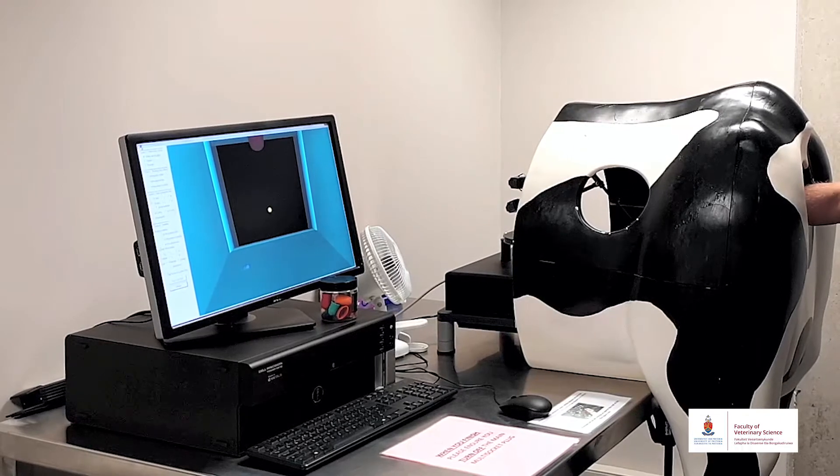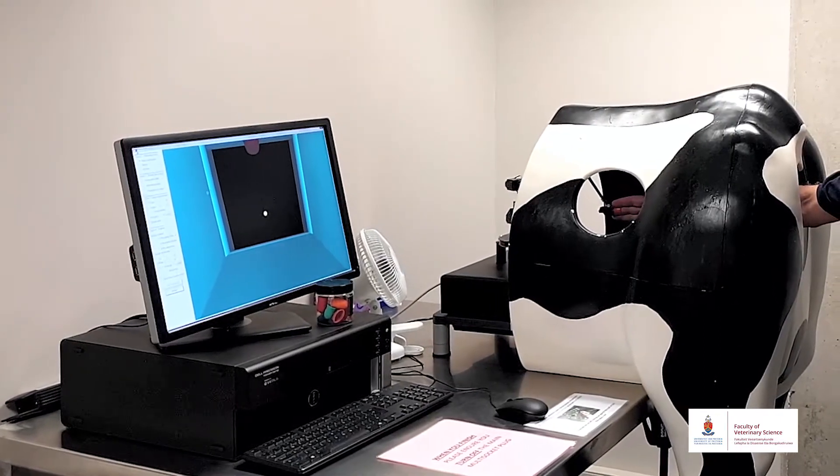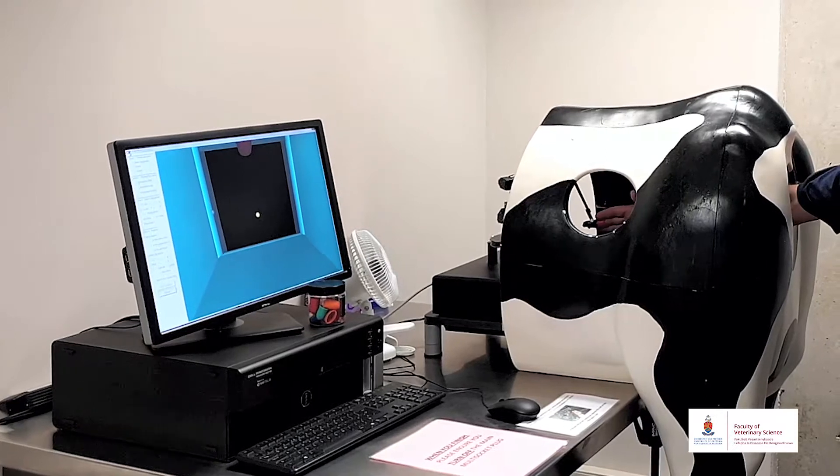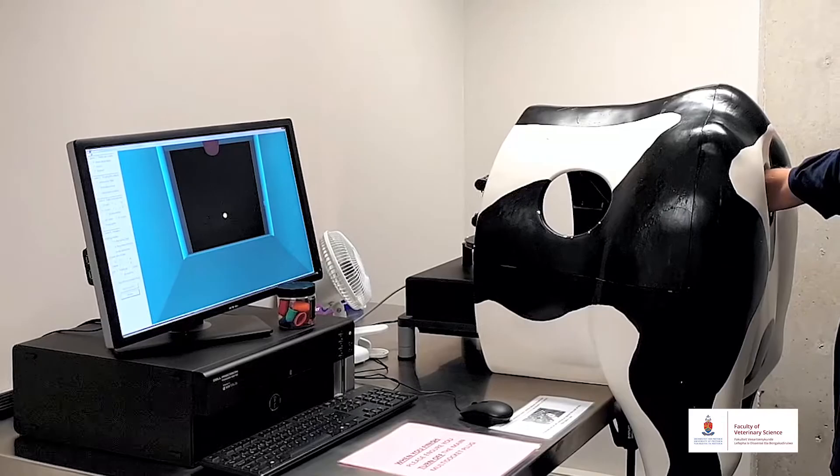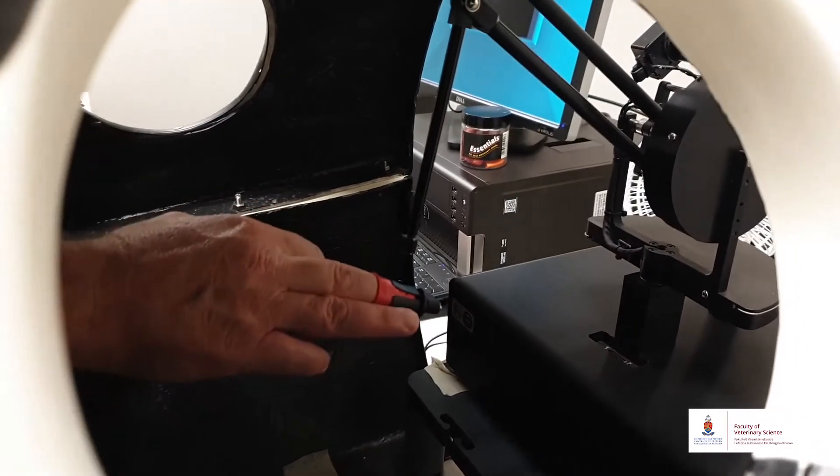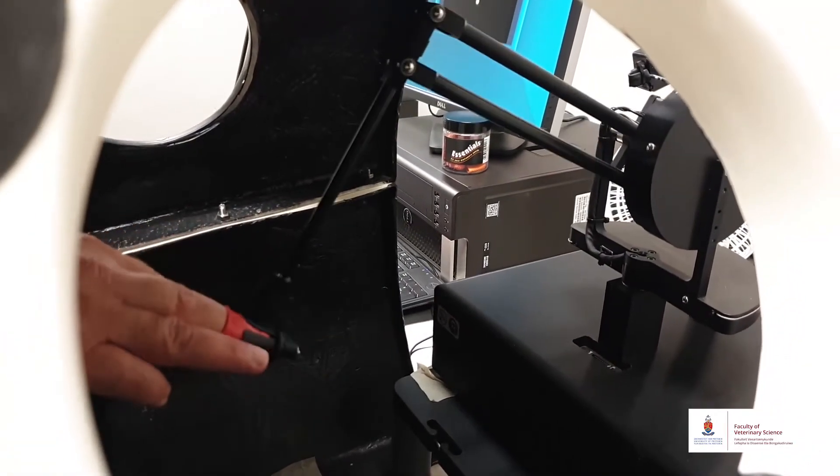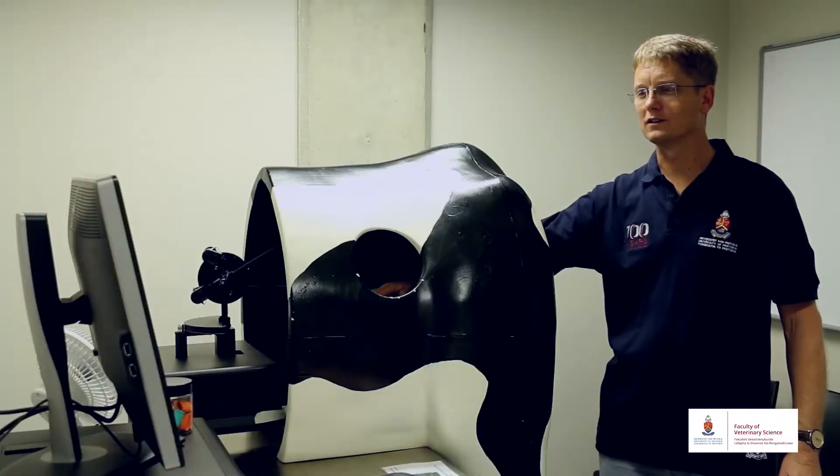You can see how the computer controls my hand so it stops me when I try to get too far and it shows me where are the edges of the pelvis that I can palpate. Palpate means I can feel with my hand inside the animal.